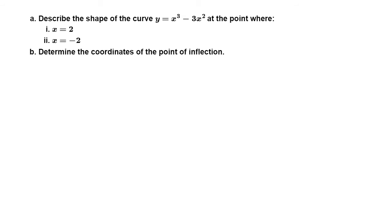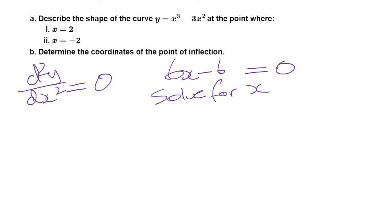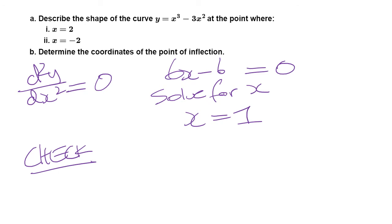Now we're going to work on part b: find where the point of inflection occurs. According to the condition for a point of inflection to occur, the second derivative equals 0. We already derived the second derivative: 6x − 6. So we set it to 0 and solve for x: 6x = 6, so x = 1. Now we need to check our answer to see if it's correct — let's verify this is actually the point of inflection.